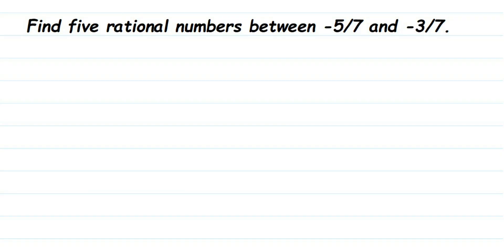Hey everyone, here is a question on rational numbers. The question is: find 5 rational numbers between -5/7 and -3/7. Now, how to find rational numbers between two given rational numbers? Remember, there are infinitely many rational numbers between any two rational numbers.